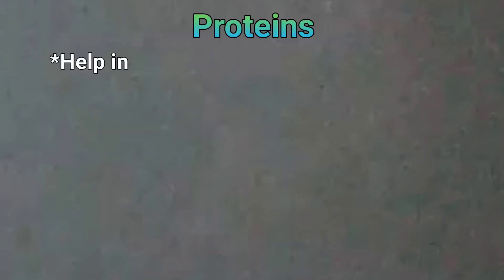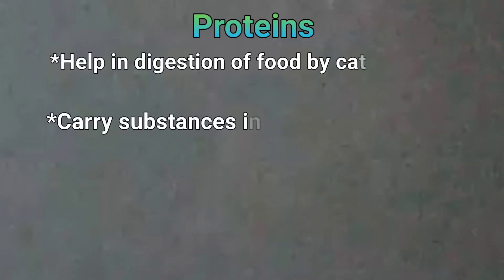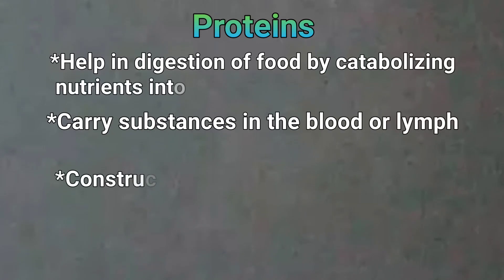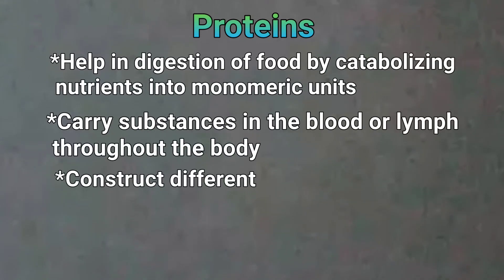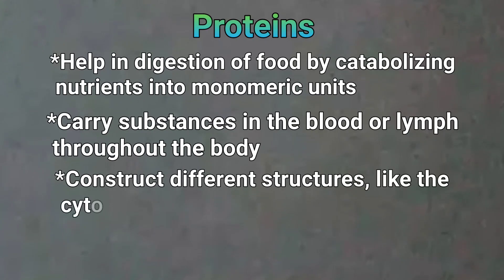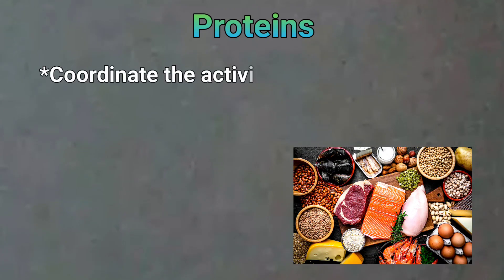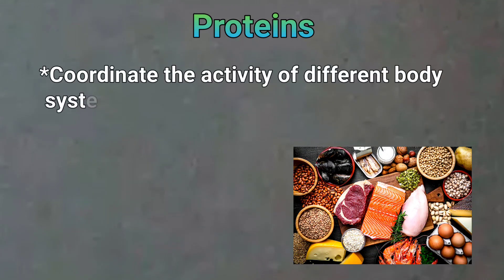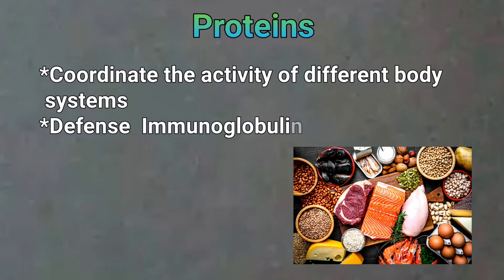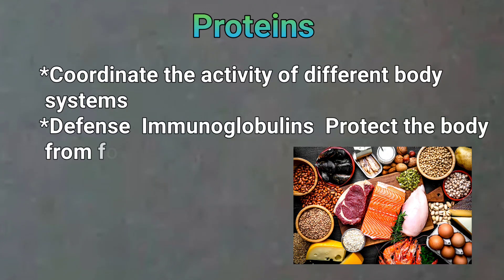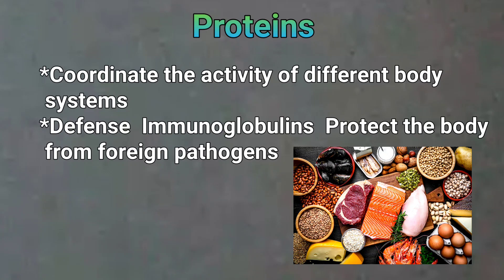Proteins help in digestion of food by catabolizing nutrients into monomeric units. They carry substances in the blood or lymph throughout the body. They construct different structures like the cytoskeleton. They coordinate the activity of different body systems, and different immunoglobulins protect the body from foreign pathogens.